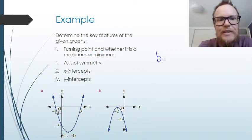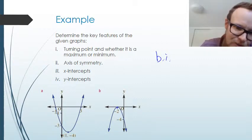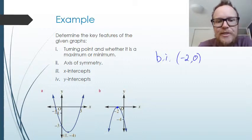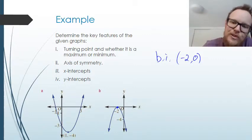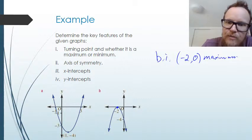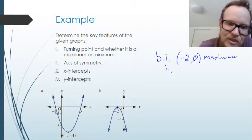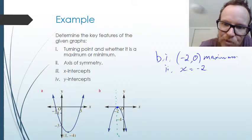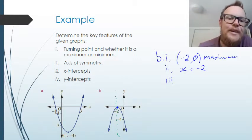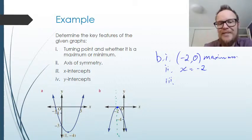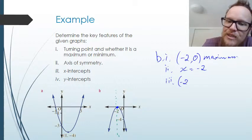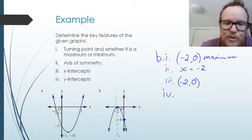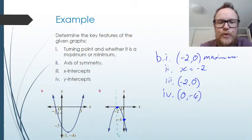For graph B, the turning point is right at the top, right on the X-axis, so the turning point is negative 2, 0. It's a maximum point. The axis of symmetry is the vertical line through that turning point, so it's X equals negative 2. There is only one X-intercept here — the graph just touches the X-axis — so the X-intercept is negative 2, 0. The Y-intercept, where it crosses the Y-axis, is 0, negative 4.